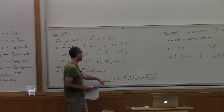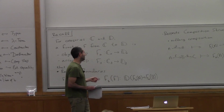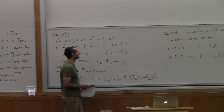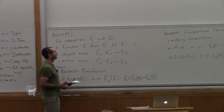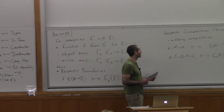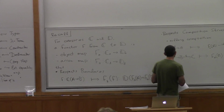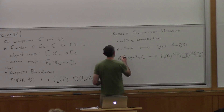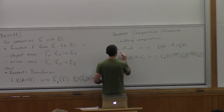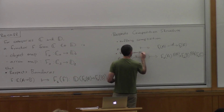The functor has to respect the structure of a category. First of all, it has to respect the boundaries: if you send an arrow over by the functor, then the domain of the image of the arrow should be the image of the domain of the arrow, and similarly for the codomain. Then it should respect what I've been calling the composition structure. The typical biased way is to tell what to do with nullary compositions, which are identities: if you send an identity over, you should get an identity.